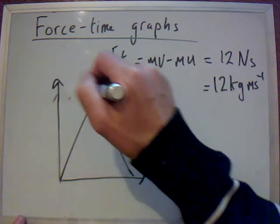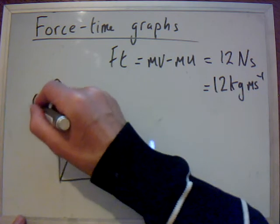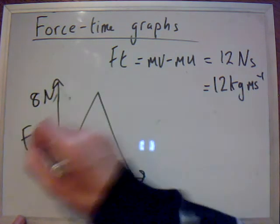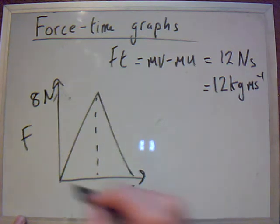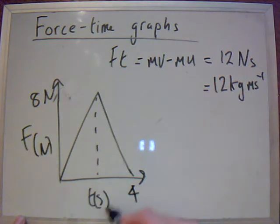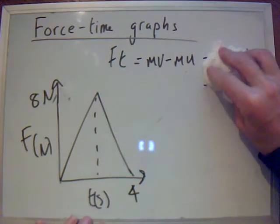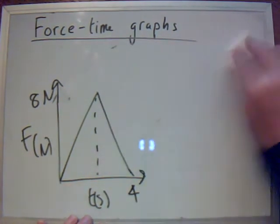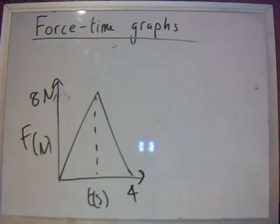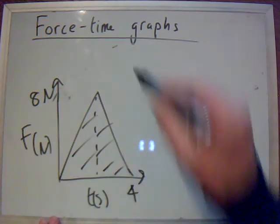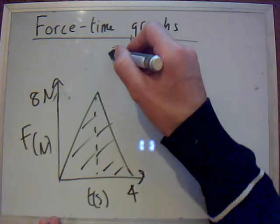And again, let's say that's up to 8 Newtons and this is 4 seconds. So, force in Newtons, time in seconds. And this time, again, the change in momentum is simply the area under the graph. So, we have a triangle here and a triangle there. So, the impulse will change in momentum.